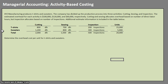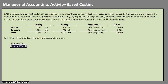We need to find out exactly how much the overhead cost is for t-shirts and sweaters individually. To do that we are going to evaluate each department individually first and then tie it back to t-shirts and sweaters. Our first step is to find an activity rate for each department by taking the estimated overhead cost and dividing it by the estimated allocation base.